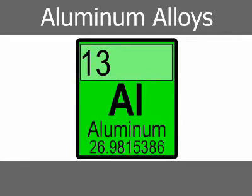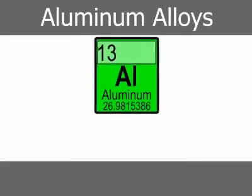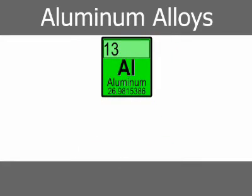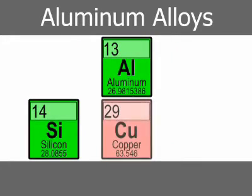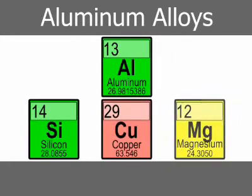The element aluminum has a specific gravity of 2.7, placing it among the lightweight structural materials. It is used as a base for die-casting alloys with three primary constituents: silicon, copper, and magnesium.